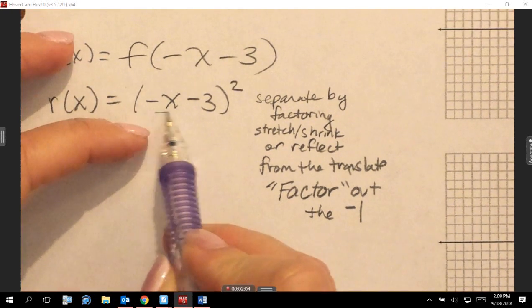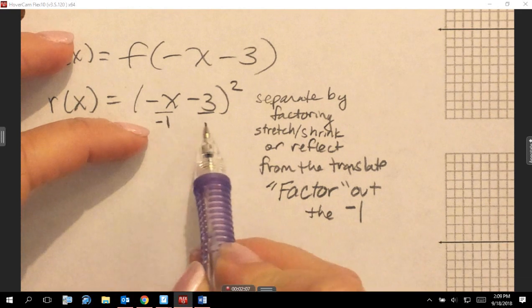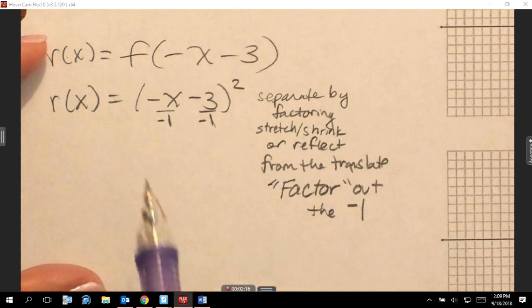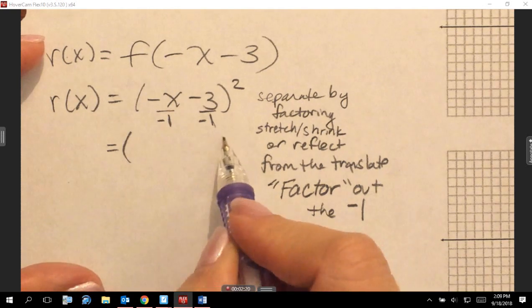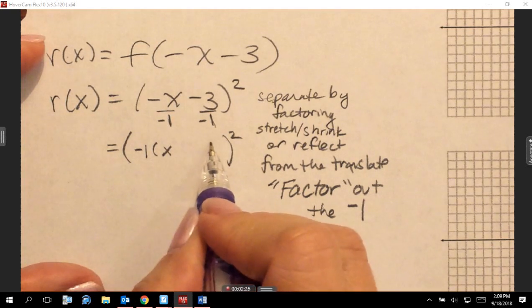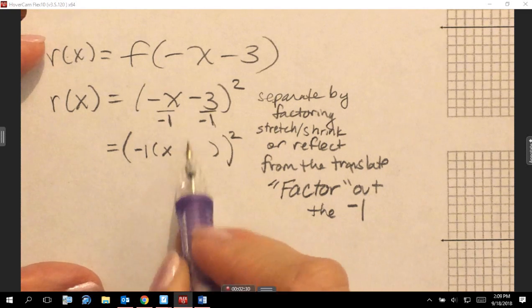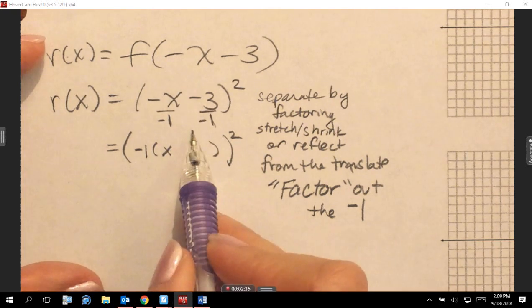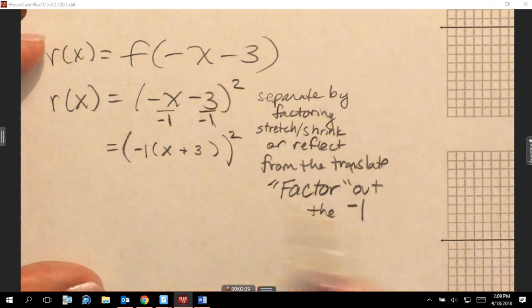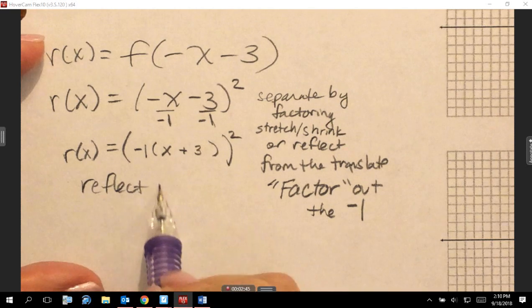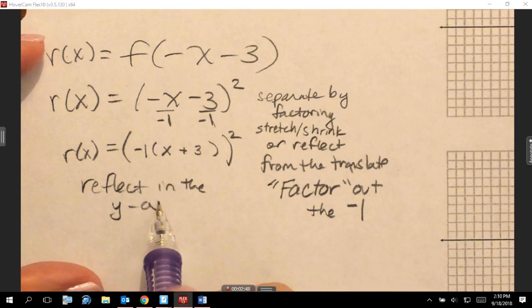So what you're going to do is you're going to factor out that negative one, like undistributing. You know the distributive property. We're going to undistribute this negative one, but it does not go outside of the square. Just going to go in its own parentheses, negative one outside of its own parentheses. It's still inside the square. When I take out the negative one from the X, I just have X left over. When I take out the negative one from the negative three, what gets left over? Plus three.